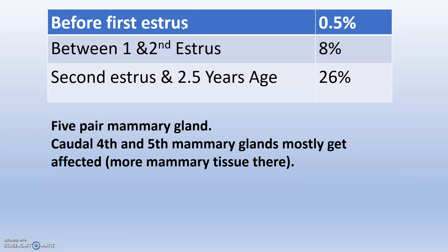Regarding predisposing factors: before first estrus, the chance is 0.5%; between first and second estrus, 8%; and after the second estrus at 2.5 years of age, the chance rises to 26%. These percentages are study-based. The caudal 4th and 5th mammary glands — the caudal abdominal and inguinal — are mostly affected because they contain more mammary tissue and are more exposed to estrogen.